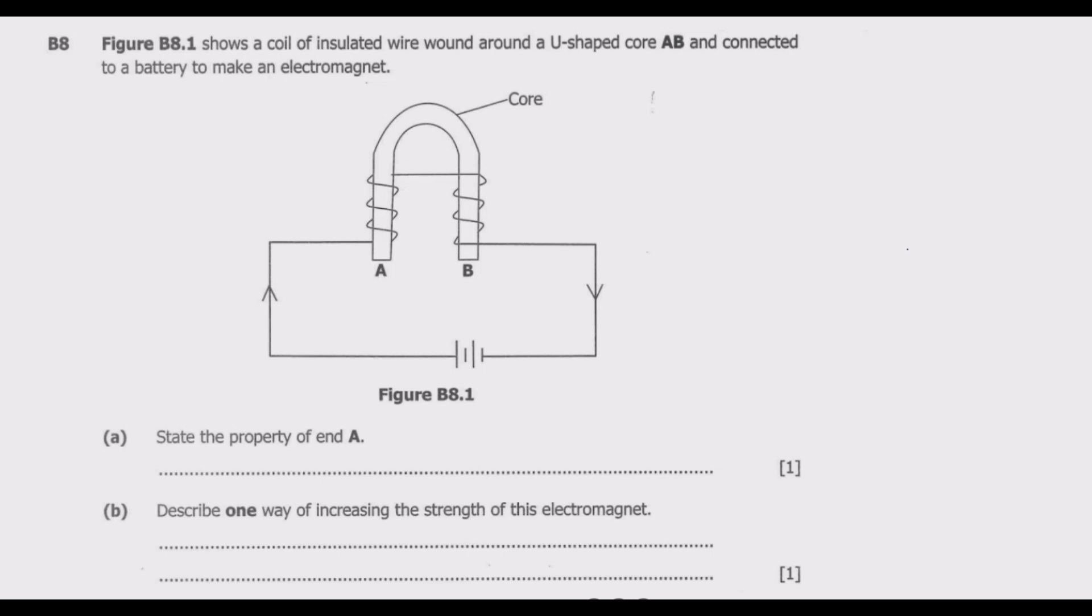Figure B8.1 shows a coil of insulated wire wound around a U-shaped core AB and connected to a battery to make an electromagnet. We have the core, the source of current, and the direction of current. Question A: state the property of end A.